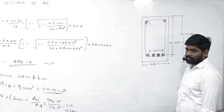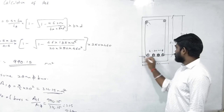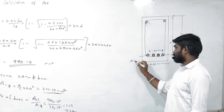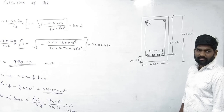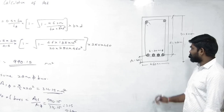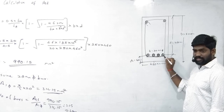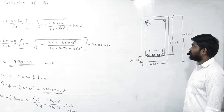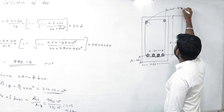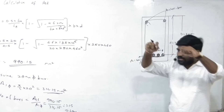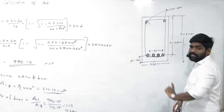4 nos. 20 mm dia bars provide kiye. Small d = 460 mm. Anchor bar ke baare mein — hanger jaante ho? Jaise kapde ko hanger pe latkaate ho, stirrups ko latkaane ke liye anchor use hota hai, warna gir jaayega. Yeh singly reinforced beam hai, doubly nahi.